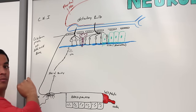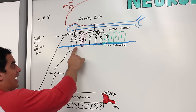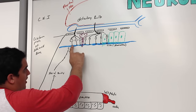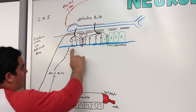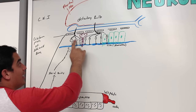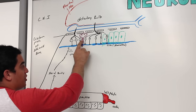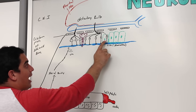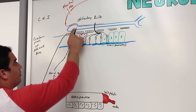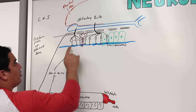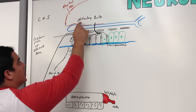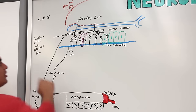We know the odorant is dissolving into this actual mucus lining and activating the immotile ciliary extensions of these bipolar olfactory neurons. The neurons sit next to Bowman's glands and supportive epithelial cells. Their axons come together to form the olfactory nerve, running through the cribriform plate of the ethmoid bone into the olfactory bulb, which is just inferior to the frontal lobe of the cerebral cortex.